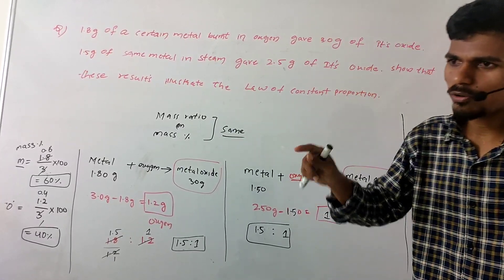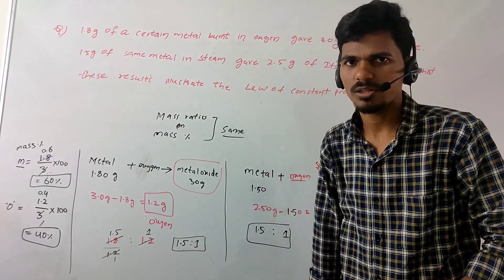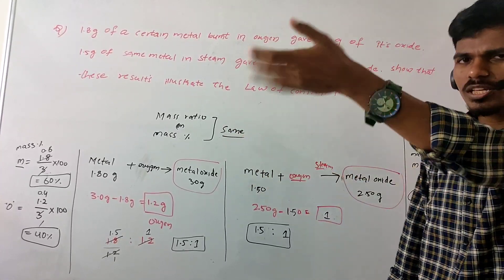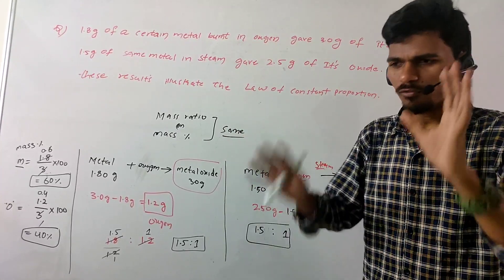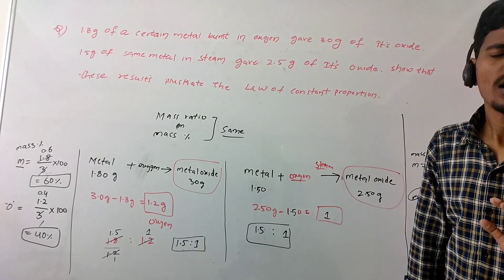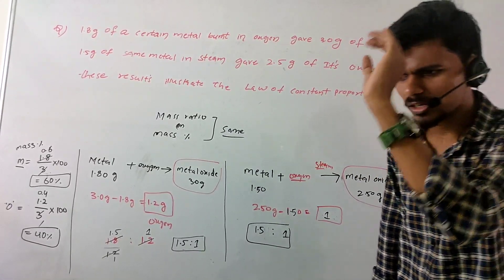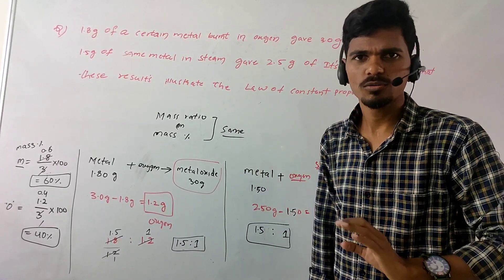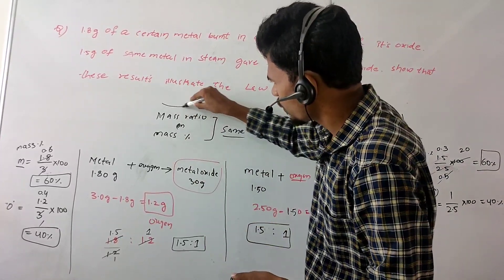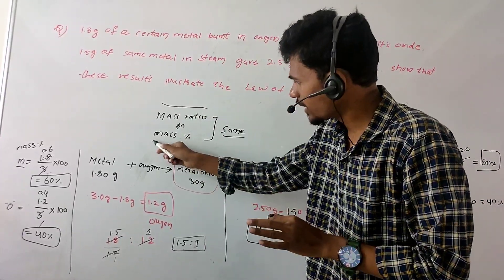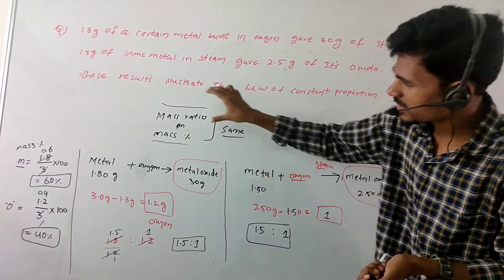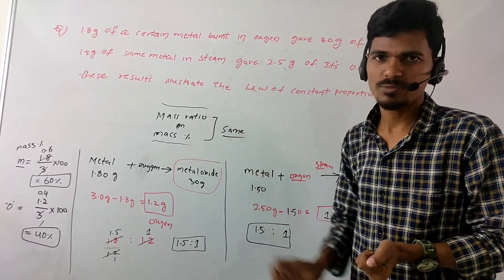One compound, for example water, always has oxygen and hydrogen in the same percentage wherever it is formed. That means the mass ratio is always the same, and the mass percentage is always the same — mass ratio and mass percentage are fixed.